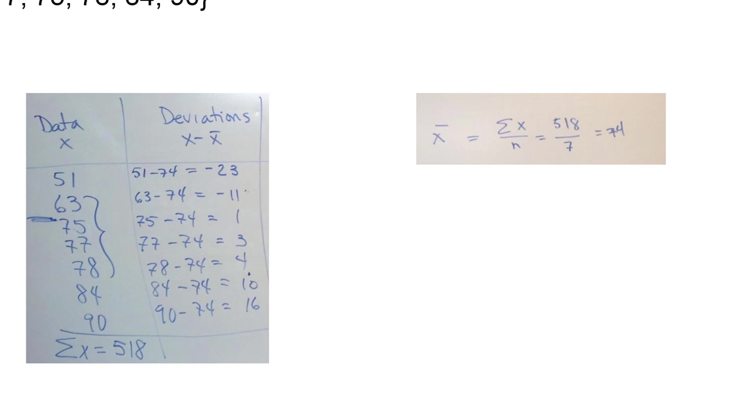Okay what's the next column again? The square of the deviations. That's right. The square of the deviations. So you take each one of these values and square it. Remember when you square a number it makes it positive.